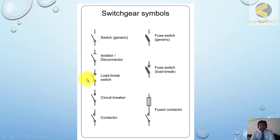This one is load break—it means you can break the current manually, but you don't have any sensing device which can sense high current and trip. This is a circuit breaker which can break the current—it has tripping and closing coils at 132 kV levels. This is a contactor.